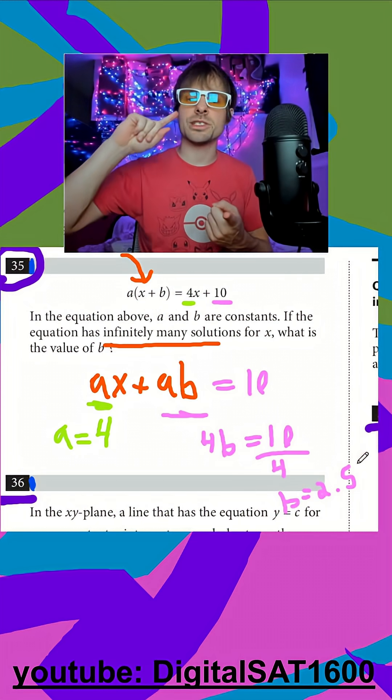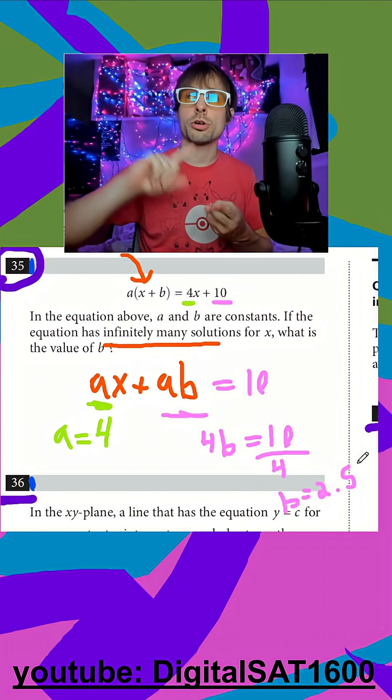Always just put them both in slope-intercept form if you see no solution linear equations, or if you see infinitely many.